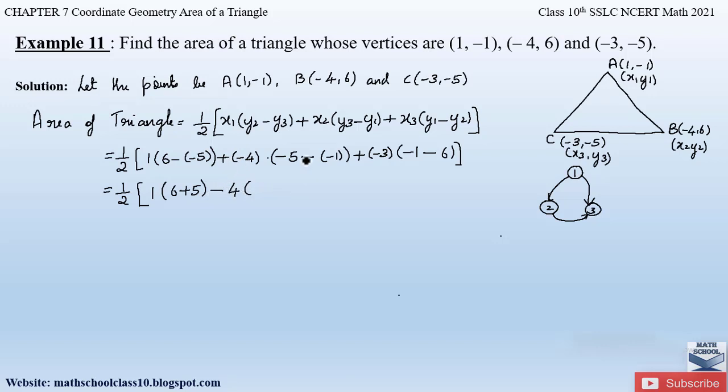Into we have -5. Again here we have minus into minus which will become plus 1. Plus into minus will be again -3 into (-1 - 6).